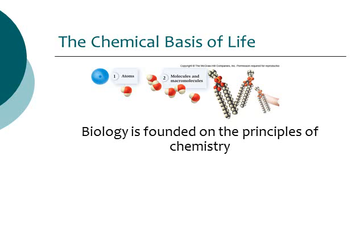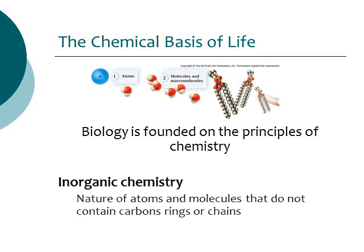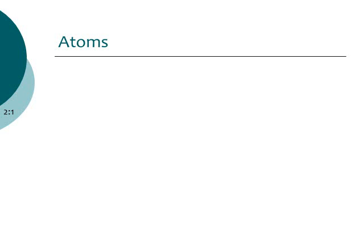Biology is founded on the principles of chemistry, so we need to look at chemistry in order to understand biology. Specifically, this chapter is looking at something called inorganic chemistry — this is what you learn about in Chem 1 and Chem 2. This lecture is just a very condensed, short introduction to inorganic chemistry. Inorganic chemistry is looking at the nature of atoms and molecules that do not contain carbon rings or chains. Molecules that contain carbon we'll look at in chapter three — that's called organic chemistry.